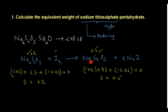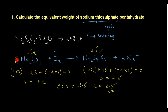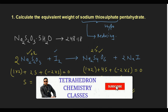To balance the reaction, you need to multiply the sodium thiosulphate part by two, giving four sodium atoms total. The change in oxidation state (delta oxidation state) is 2.5 − 2 = 0.5. Since we multiplied sodium thiosulphate by 2, we multiply 0.5 by 2 as well, giving 1.0. So the n factor is 1.